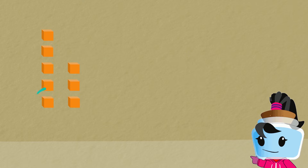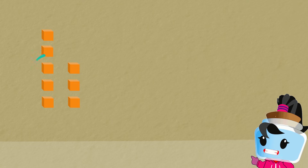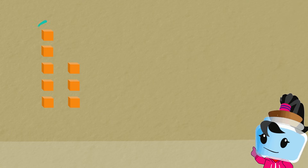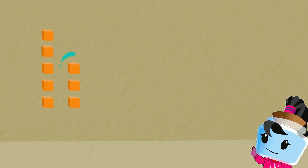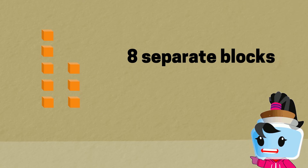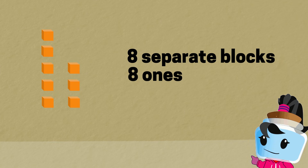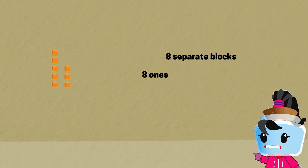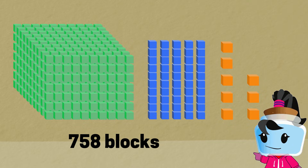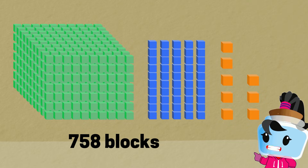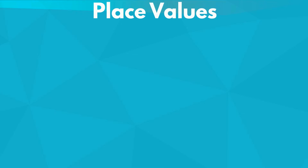Lastly, let's count the separate blocks: one, two, three, four, five, six, seven, eight. So we have eight ones. Therefore, we have seven hundred and fifty-eight blocks in total. Good job!